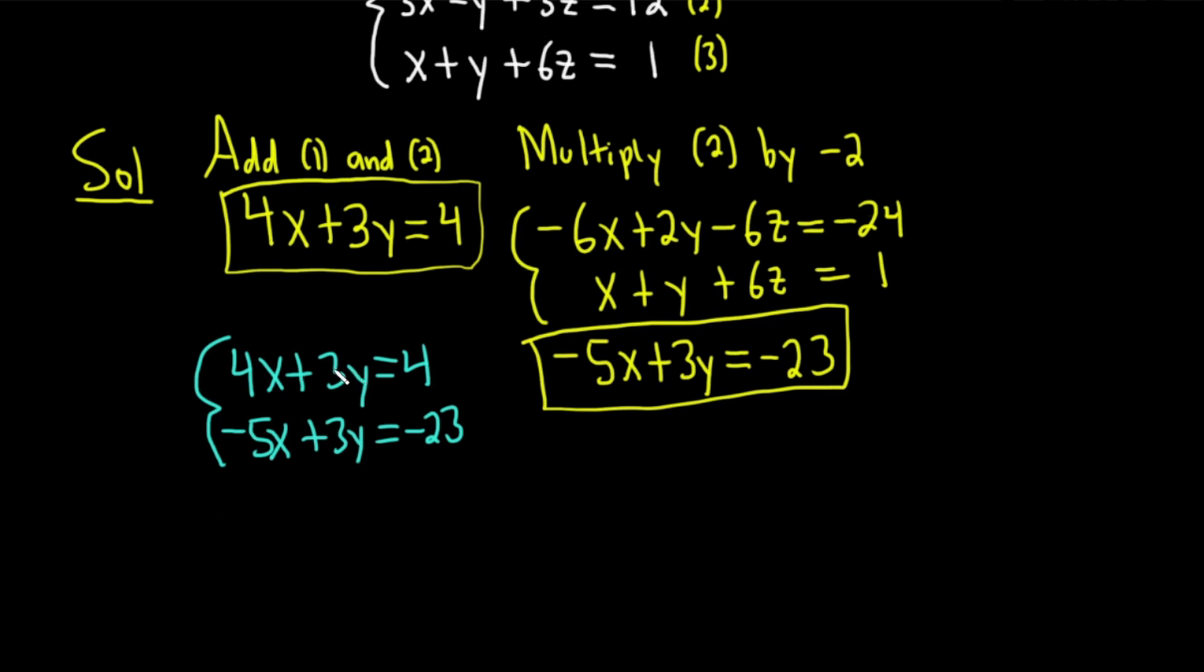We need one of these threes to be negative, so let's multiply the first equation by negative 1. That'll give us negative 4x, negative 3y equals negative 4. Now let's add these two. The negative 5x plus a negative 4x is a negative 9x. These go away. And then here we get negative 27. We can divide by negative 9, and we get x equals 3. I'm going to put that in a box because that's a huge accomplishment. We finally got one of the variables.